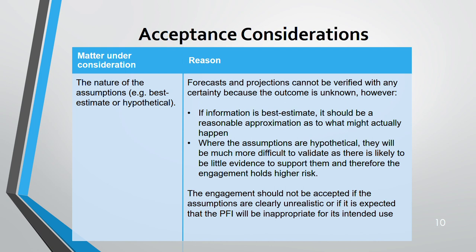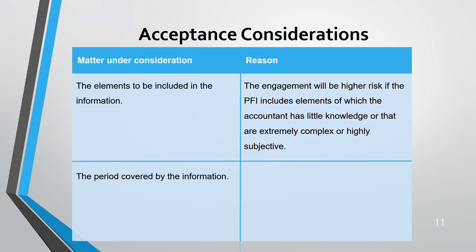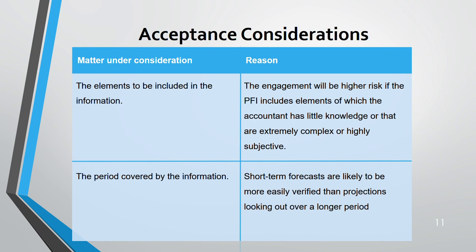An engagement should not be accepted if assumptions are clearly unrealistic or if the PFI is expected to be inappropriate for its use. Consider also the elements included — engagement risk is higher if the PFI includes elements the accountant does not have sufficient knowledge of, or that are extremely complex or highly subjective. Period covered is also a factor: short-term forecasts are less risky and easier to verify compared to long-term ones.